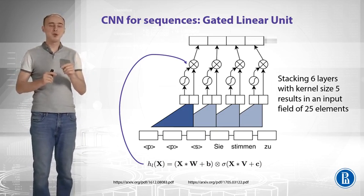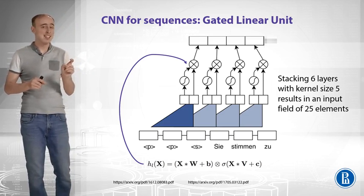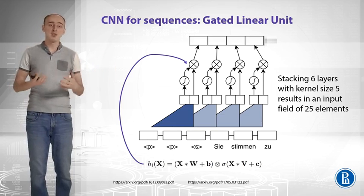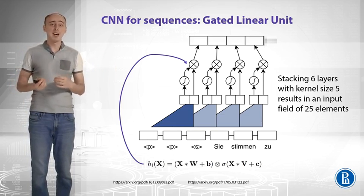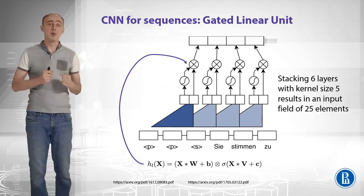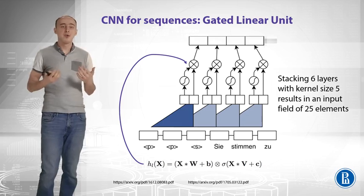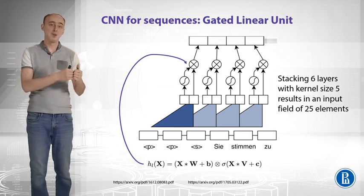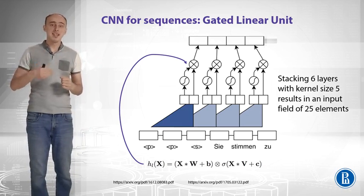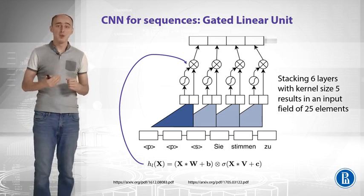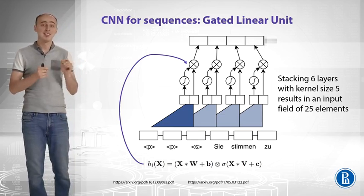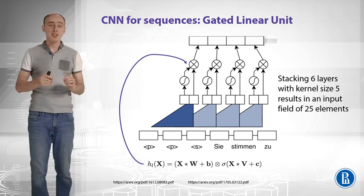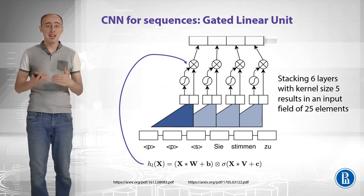However, looking at only three last tokens is not very good. We may need to look at the last 10 tokens or more, since LSTMs can have a very long short-term memory. From convolutional image networks we know how to increase the receptive field — we stack convolutional layers. With six layers and kernel size 5, the receptive field becomes 25 elements, and experiments show that a receptive field of 25 elements may be enough to model sequences.